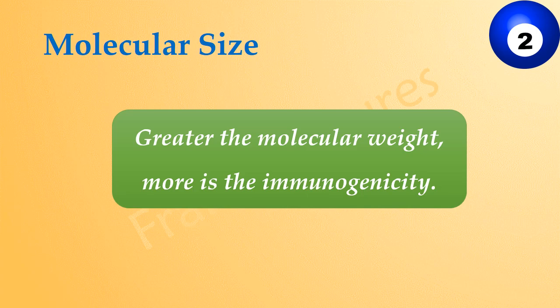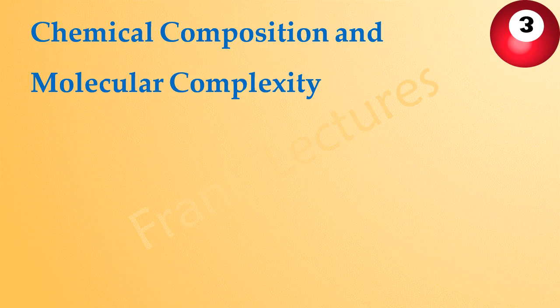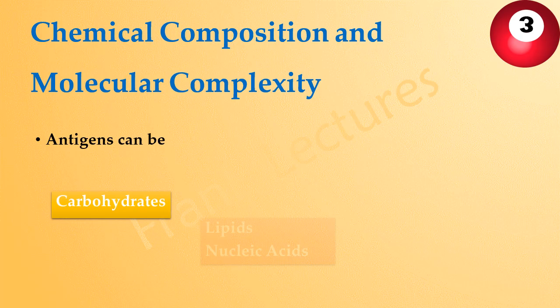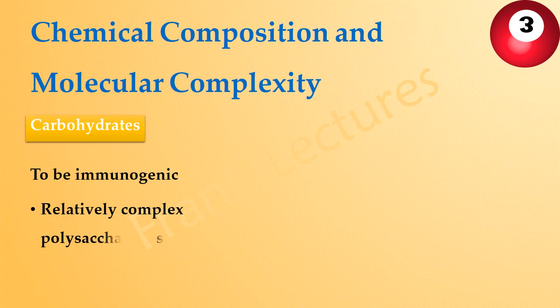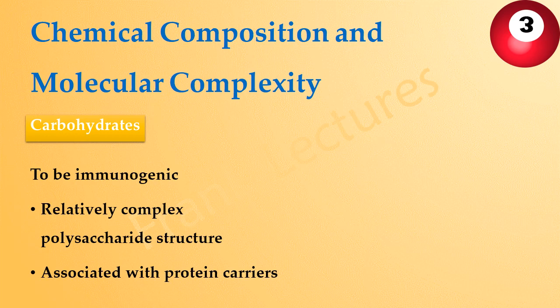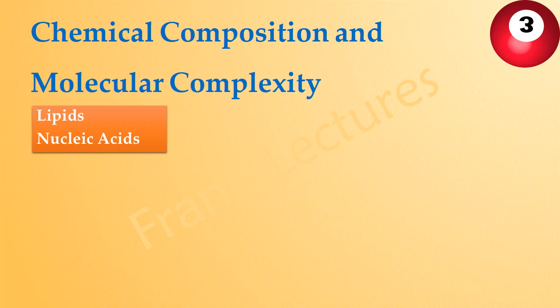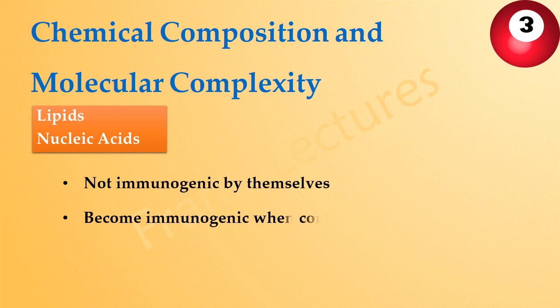The next important property which determines the immunogenicity of a substance is its chemical composition and molecular complexity. Antigens can be carbohydrates, lipids, nucleic acids, or proteins chemically, but their immunogenicity varies. Carbohydrates are immunogenic only if they have a relatively complex polysaccharide structure or when associated with protein carriers — for example, blood group antigens. Lipids and nucleic acids are not immunogenic by themselves, but they become immunogenic when conjugated to protein carriers.